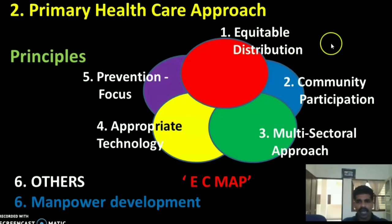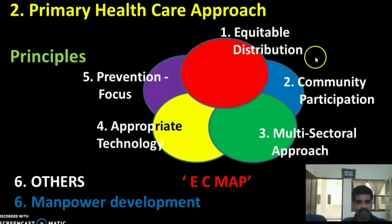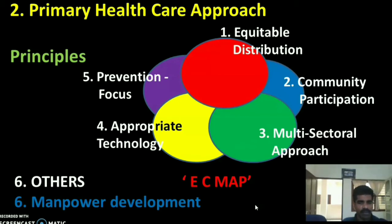The second is the primary health care approach: rendering community nursing services by following the principles of primary health care. There are mainly five principles summarized by the mnemonic ECMAP: E for equitable distribution, C for community participation, M for multi-sectoral approach or intersectoral coordination, A for appropriate technology, and P for prevention focus. There is one additional principle: manpower development.